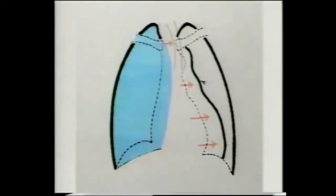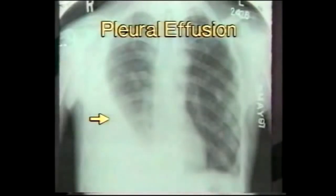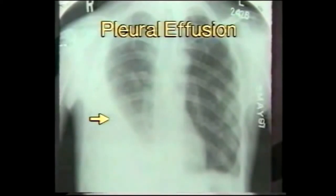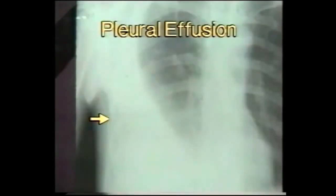This is a typical X-ray of a moderate-sized pleural effusion. Note the homogeneous opacity of the right lower zone with a concave upper border, which is well defined but not sharp, rising higher on the lateral side towards the axilla. This is a characteristic appearance in pleural effusion.